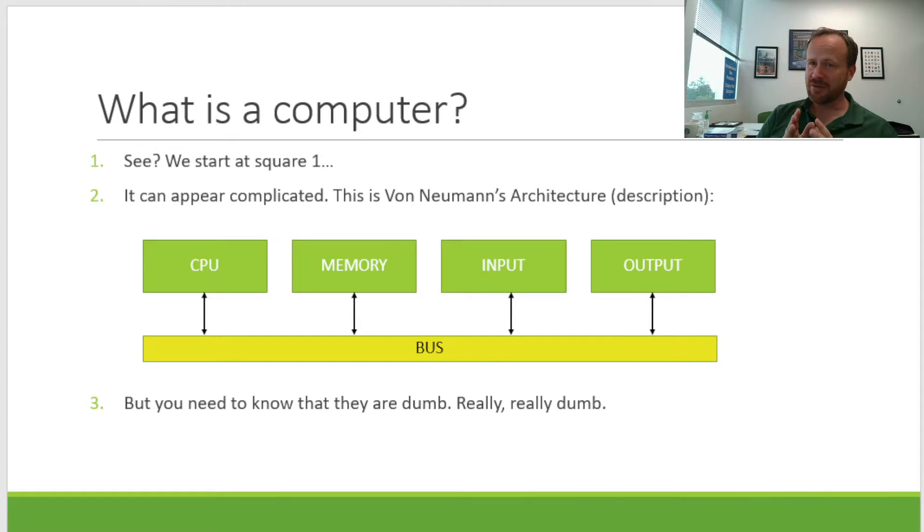But there's one thing that you need to know about computers. Computers are dumb. Like, really, really dumb. Like, I cannot express to you how dumb computers are. Even when we think of things like machine learning and AI, you have to understand that the machine itself is incredibly dumb. It doesn't know how to do anything. What we do in this class and in computer science is we sort of make computers do the things that we want them to do. And that can be pretty hard. In fact, the entire field of computer science is really built on that, making these very simplistic machines do what it is that we want them to do.